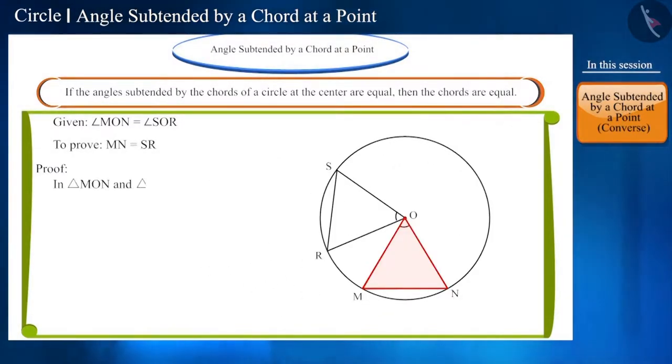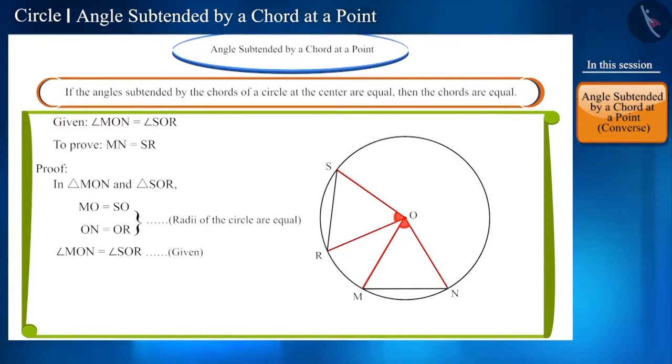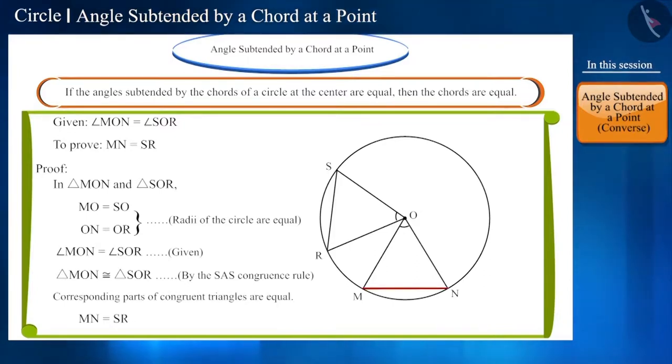In triangle M-O-N and triangle S-O-R, a pair of two sides are equal because they are the radii of the circle. And the corresponding angles between these sides are also equal. Therefore, both triangles M-O-N and S-O-R are congruent according to the S-A-S congruence rule. Therefore, side M-N and side S-R will also be equal.